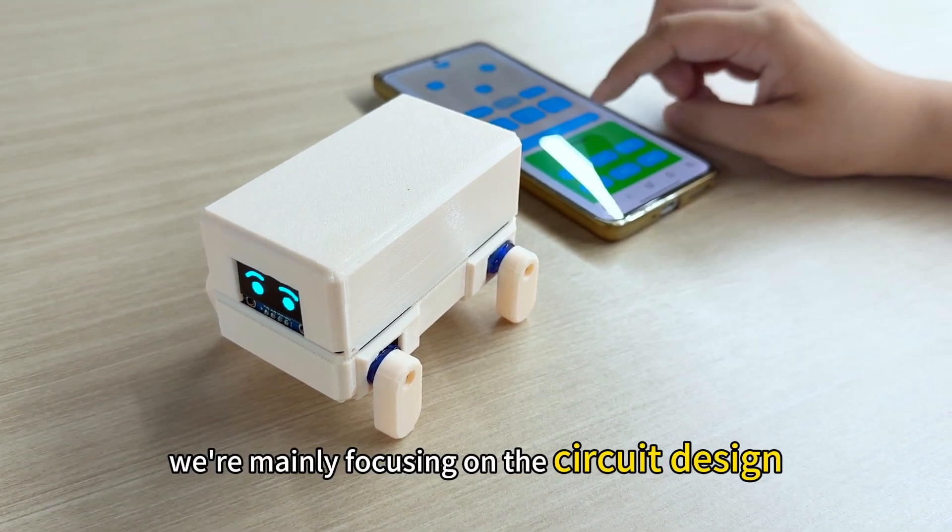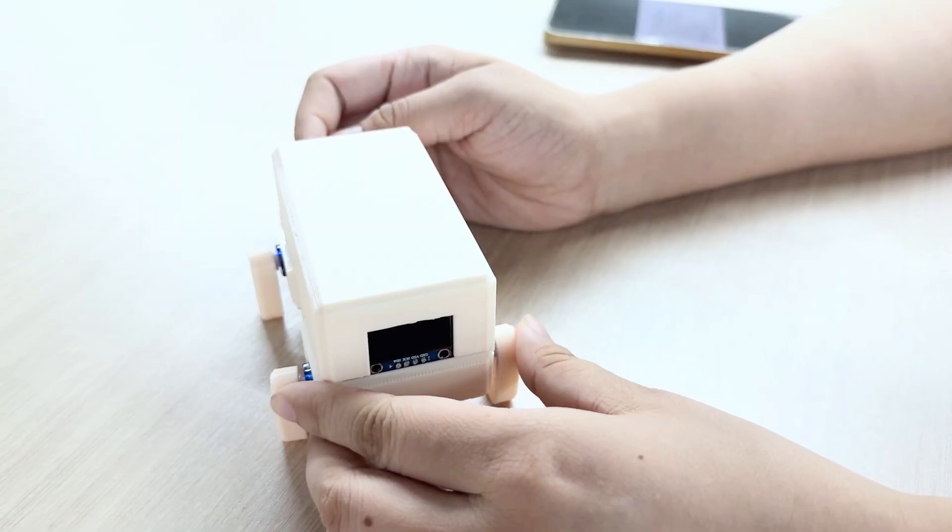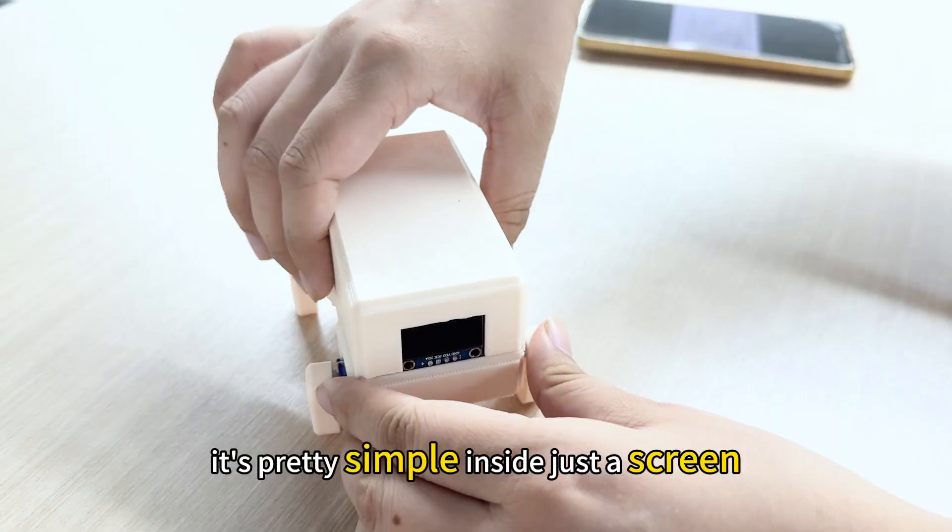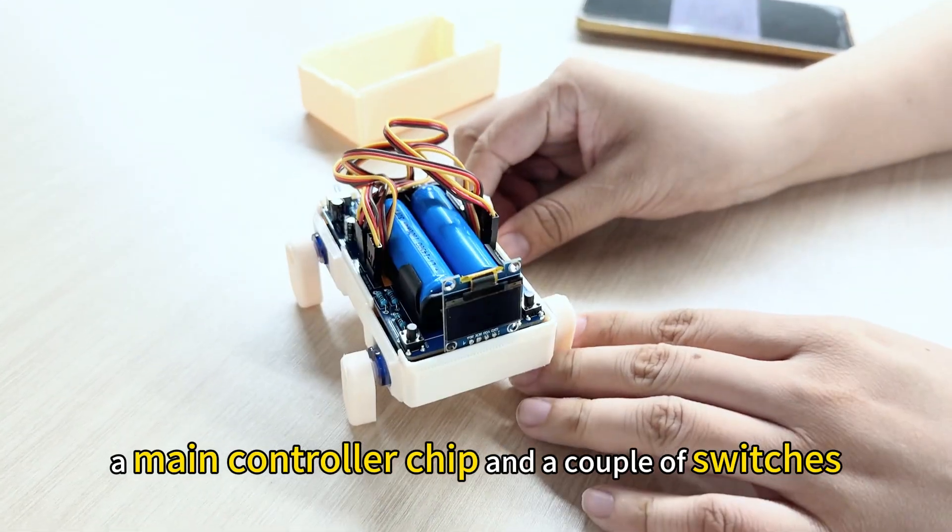In this video, we're mainly focusing on the circuit design. Let's open the shell and take a look inside. It's pretty simple inside, just a screen, 2 AA batteries, a main controller chip, and a couple of switches.